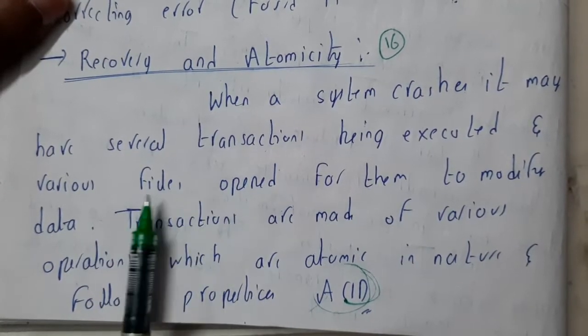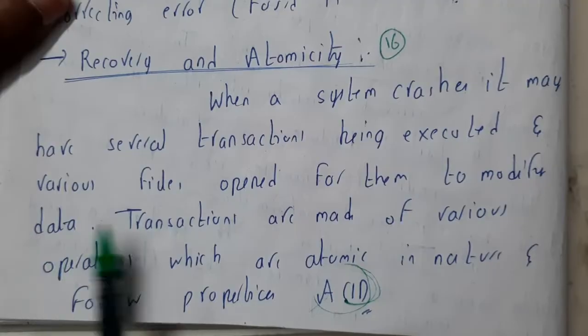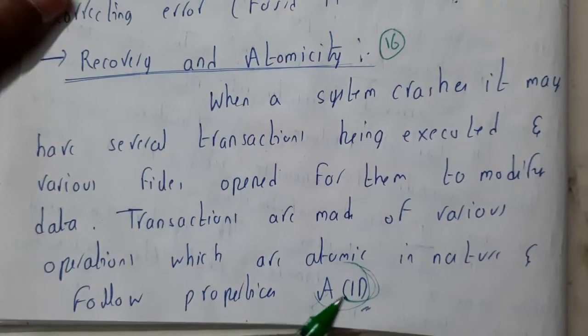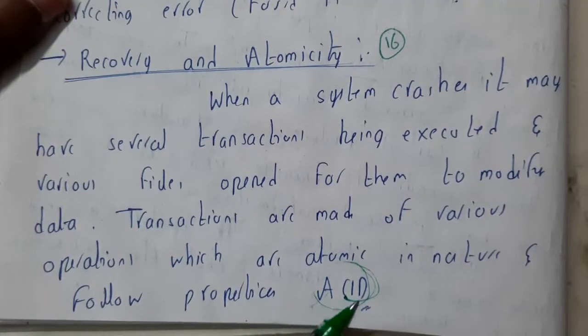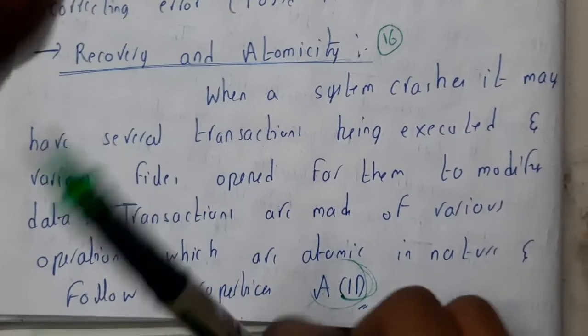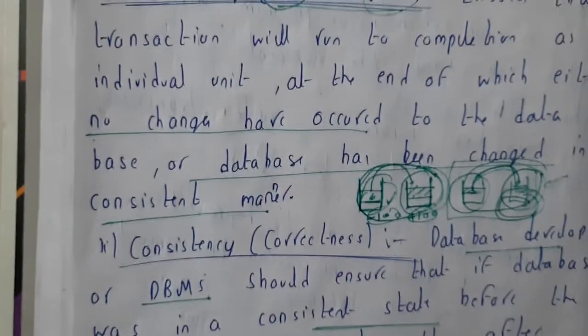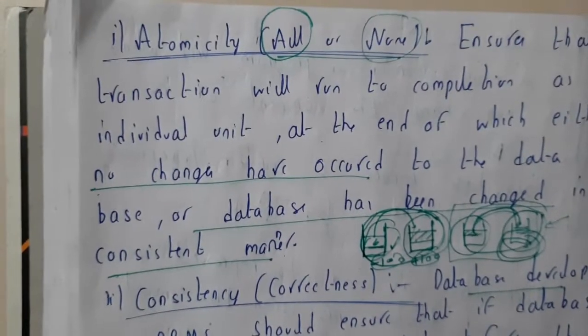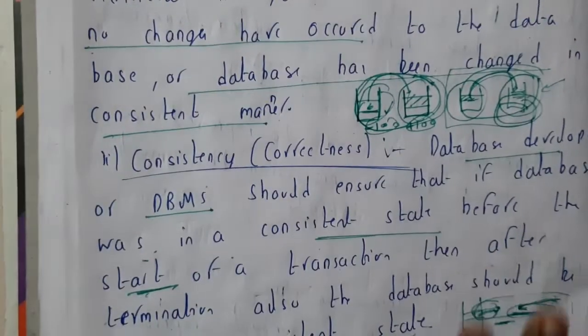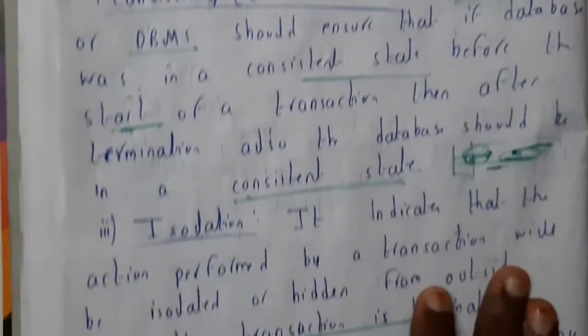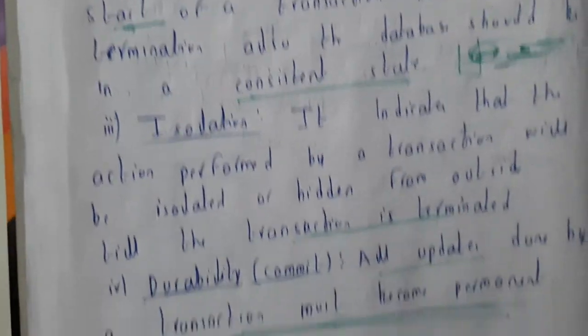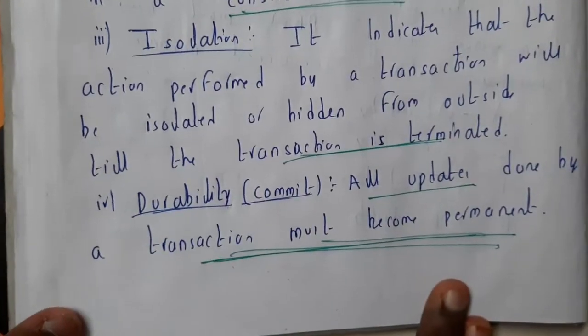The previous transactions and the current data transactions should be correct — we'll be checking the correctness. We'll be checking all the ACID properties. We have already discussed the four ACID properties: atomicity, consistency, isolation, and durability.